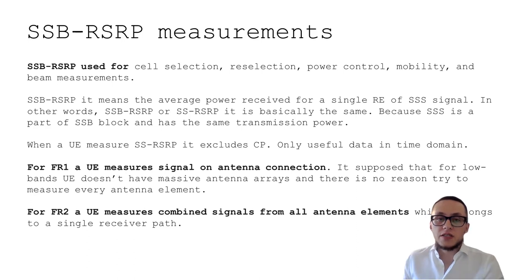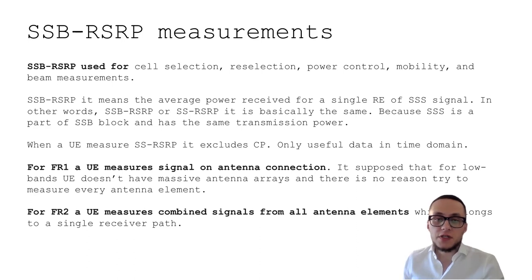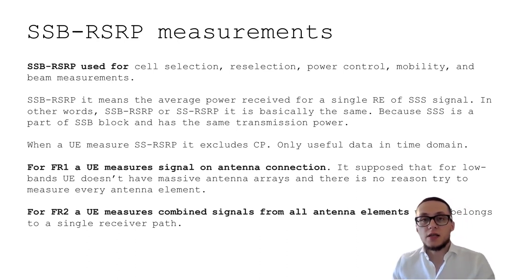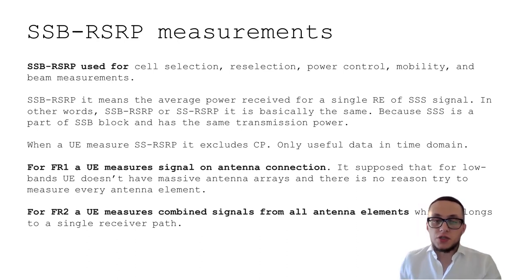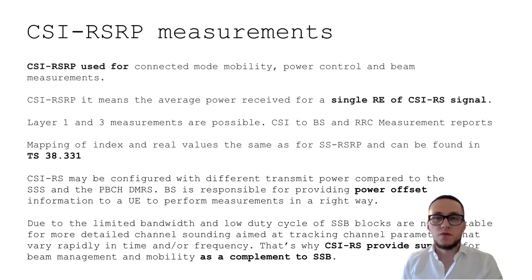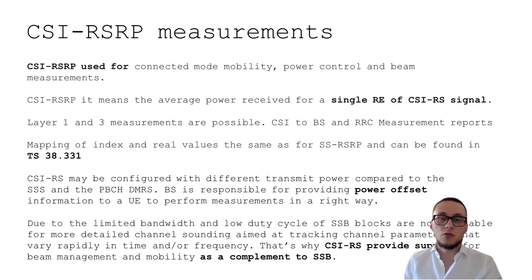When user equipment measures SSRSRP, it measures only useful data in the time domain. For FR1, where there are no massive antenna arrays at the UE, measurements are taken at a single antenna connection as a summarized signal. For FR2 bands, where the UE may also have a massive antenna array, it tries to measure combined signals from all antenna elements belonging to a single receiver path. In addition to SSB, there are also channel state information reference signals, CSI-RS, which can be used for dedicated channels, connected mode mobility, power control, and beam measurements.